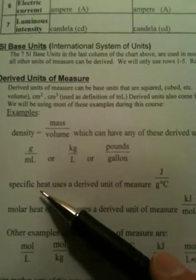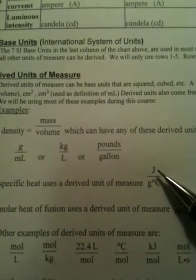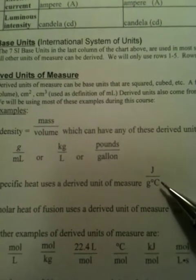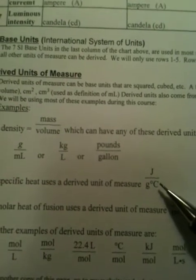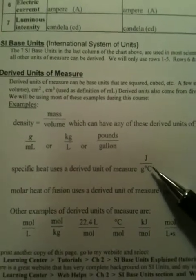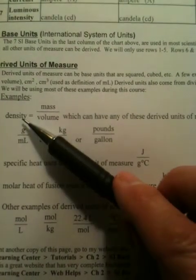Now, down here, specific heat is a unit that uses J or joules over grams degrees centigrade. That's pretty weird, you'll have to admit. But that is used and we will be using it later in the course. This density stuff you'll be seeing pretty quick.